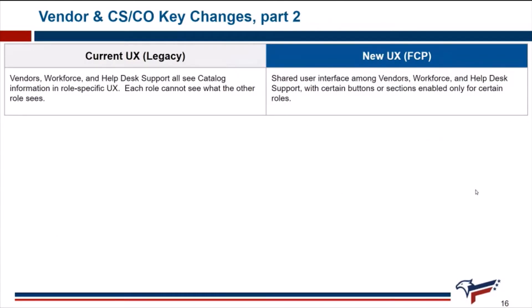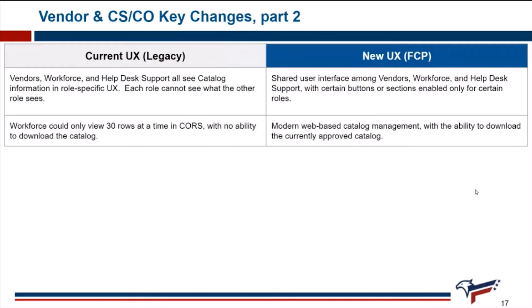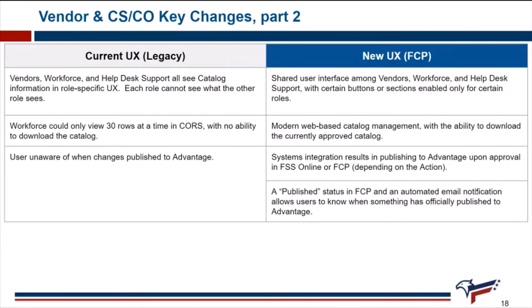The FCP system also introduces a shared user interface among vendors, workforce, and help desk support, with certain buttons or sections enabled only for certain roles. Once an action publishes to Advantage, FCP regenerates the catalog's currently approved catalog product file, which can be downloaded by any user who has access to the catalog. Once an action successfully completes the automated publishing process, the FCP action transitions to the published status, and the vendor receives an automated email notification.